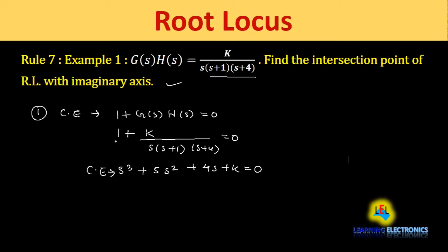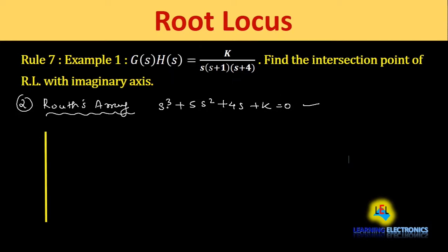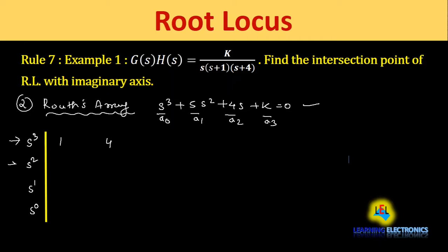Step 2 is to construct the Routh array from the characteristic equation s³ + 5s² + 4s + k = 0. The array rows are: s³ row: 1, 4; s² row: 5, k; s¹ row: (5·4 − k)/5 = (20 − k)/5, 0; s⁰ row: k. The coefficients are placed by separating even and odd powers accordingly.